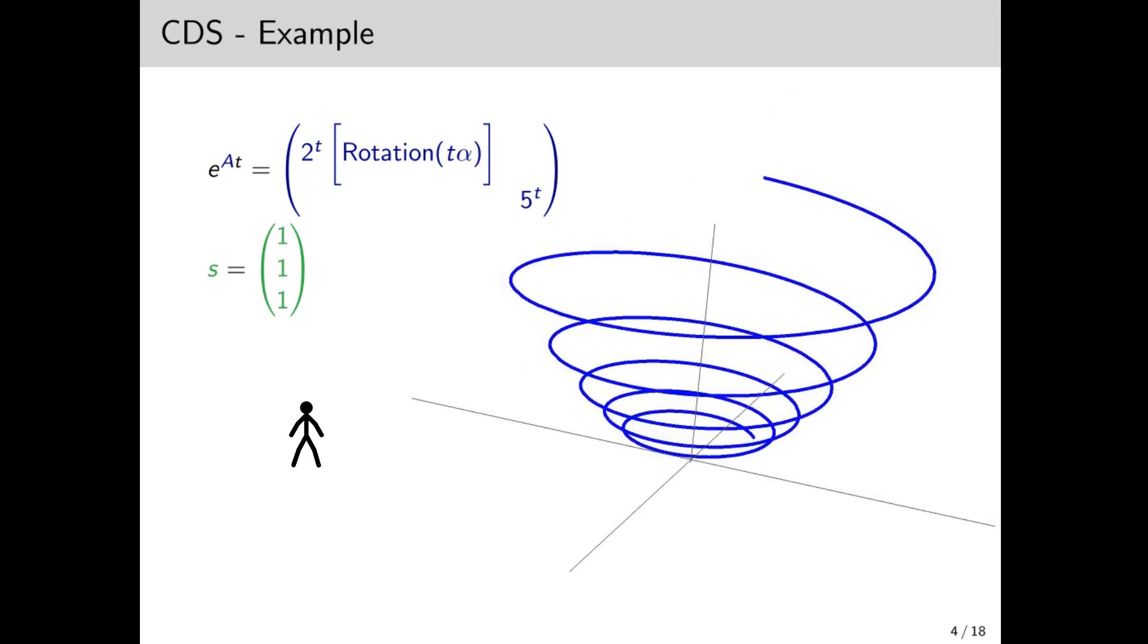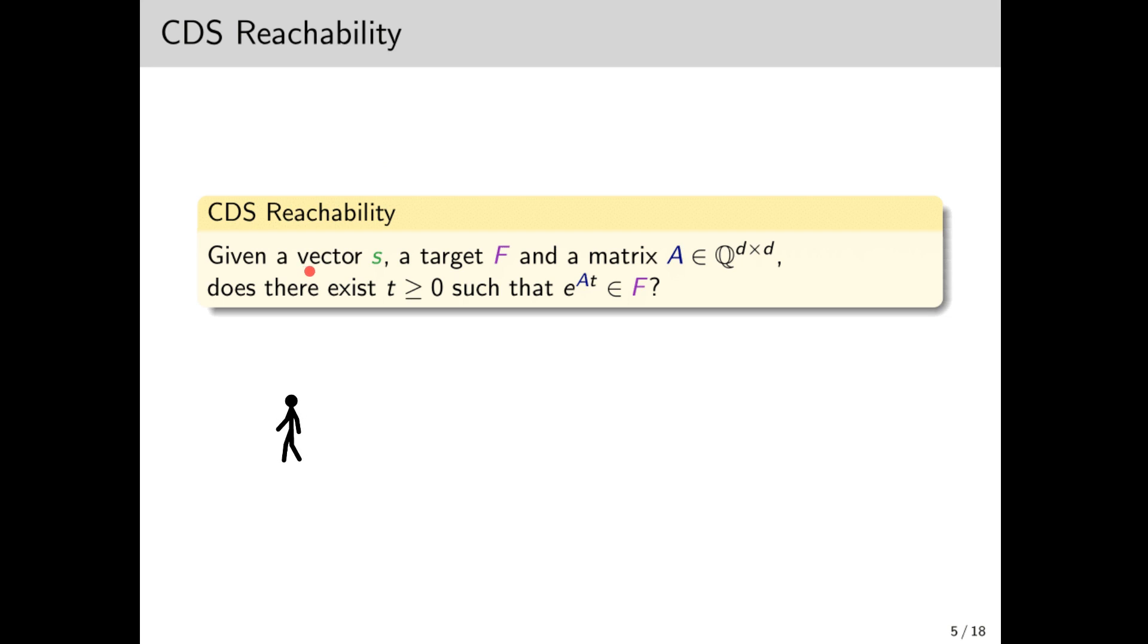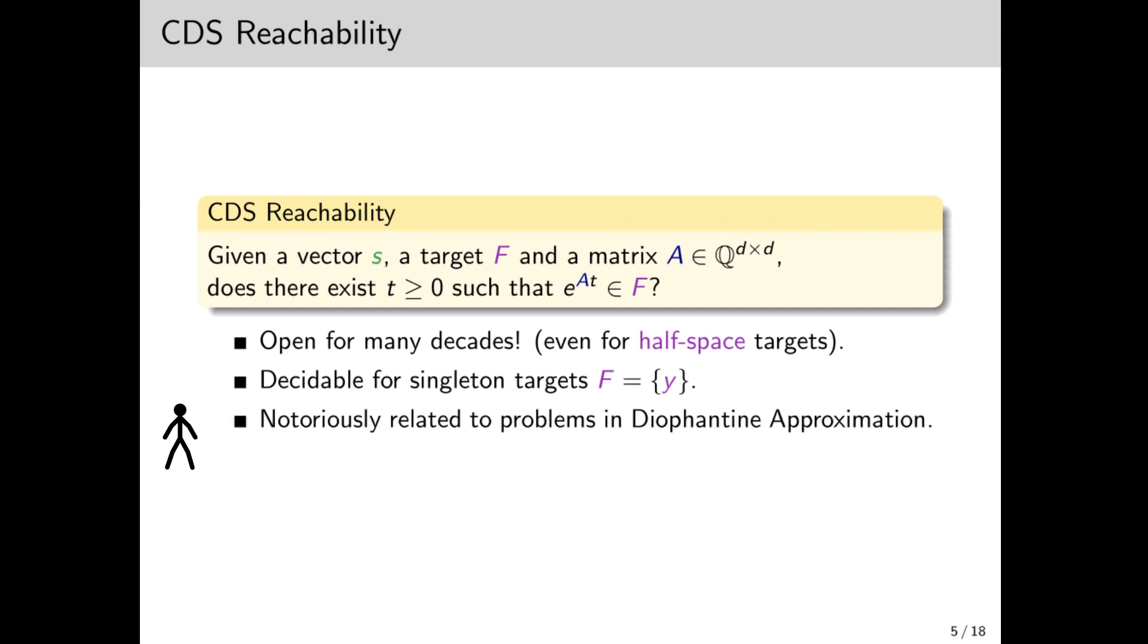The fundamental problem we want to study is whether a given CDS hits a target, which is just some set. We call this problem CDS reachability. Given an initial vector s, a target F, and a matrix A, is there some t such that e^(At)s hits F? The decidability of this problem has been open for many decades, even when the target is a very simple set, such as a half space. It is known to be decidable when the target is a singleton, though, and even that is non-trivial. The fact that it's open is annoying, but it's known to have strong connections to problems in Diophantine approximation, so its decidability would have huge consequences in number theory.